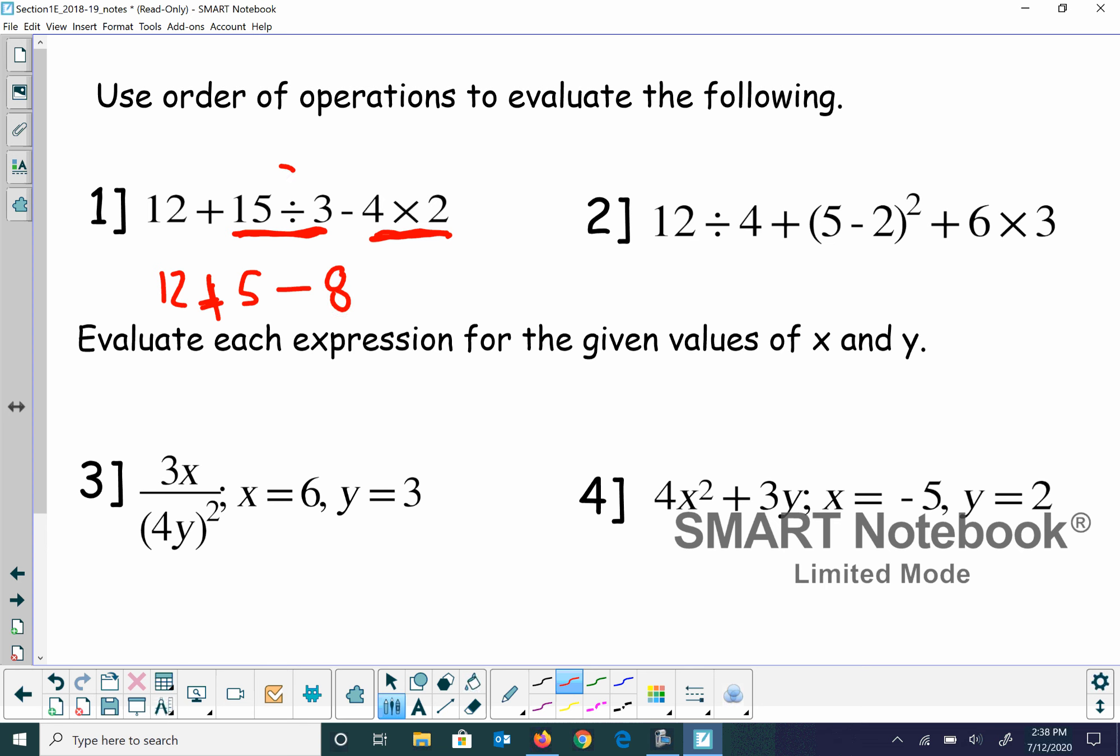So we took care of this, and we took care of this. And then we go to 12 plus 5 is 17. 17 minus 8 is equal to 9.